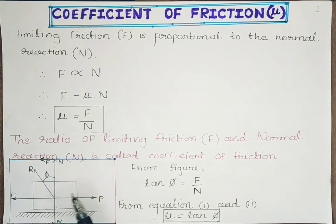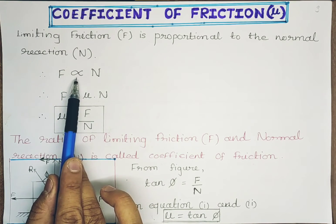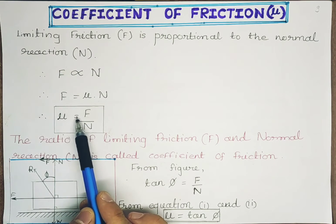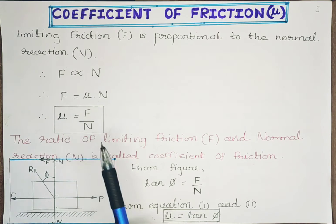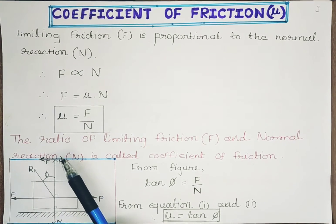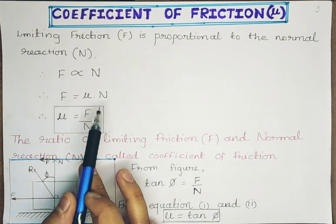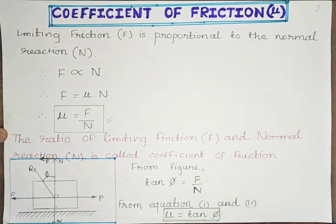This frictional force F is directly proportional to N. By removing the proportionality sign we get a constant μ, making this constant the subject: μ = F/N. Based on theory and derivation, we can define coefficient of friction as the ratio of limiting friction to normal reaction: μ = F/N.